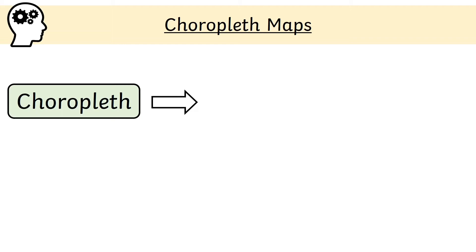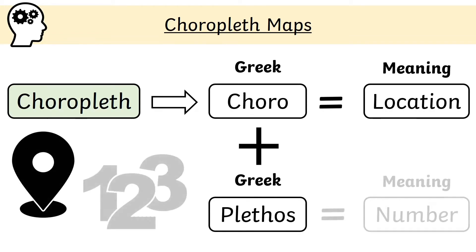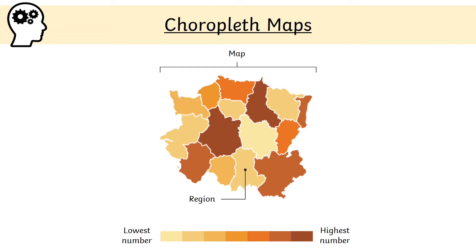Population density is usually shown on a choropleth map. The word choropleth comes from the ancient Greek words 'koro', meaning location, and 'pleth', meaning number. A choropleth map therefore uses colour shading to show data, and is used to show differences in data between different areas and regions. Generally, the darker the shading, the higher the number it represents — so the lightest shading indicates the fewest people per square mile and the darkest indicates the most.